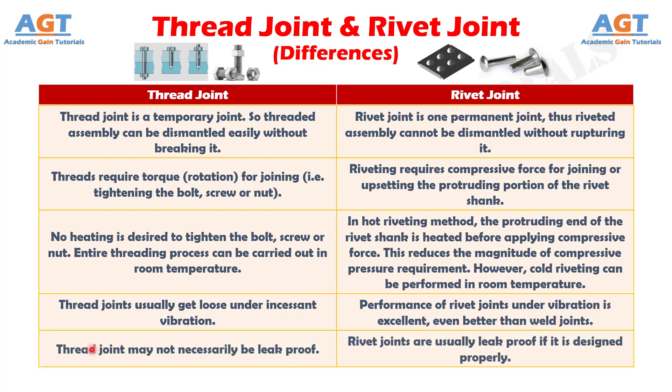Number five: thread joints may not necessarily be leak proof, whereas rivet joints are usually leak proof if designed properly.